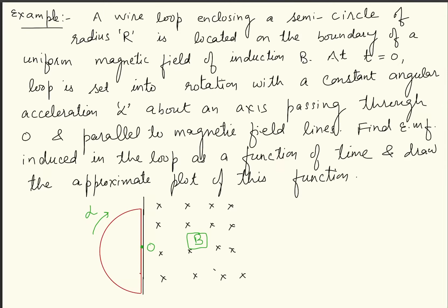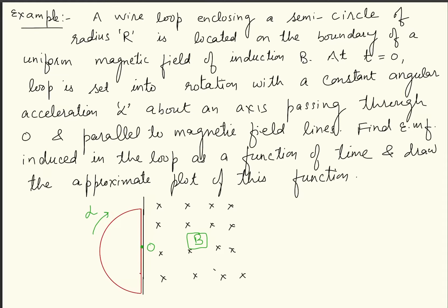The situation is basically that the magnetic field has a line boundary. The magnetic field is present on the right side, perpendicular to the plane of the paper. O is the center of this wire loop and the axis is perpendicular to the plane of the paper, because the magnetic field is parallel. This plane is rotating with the loop.